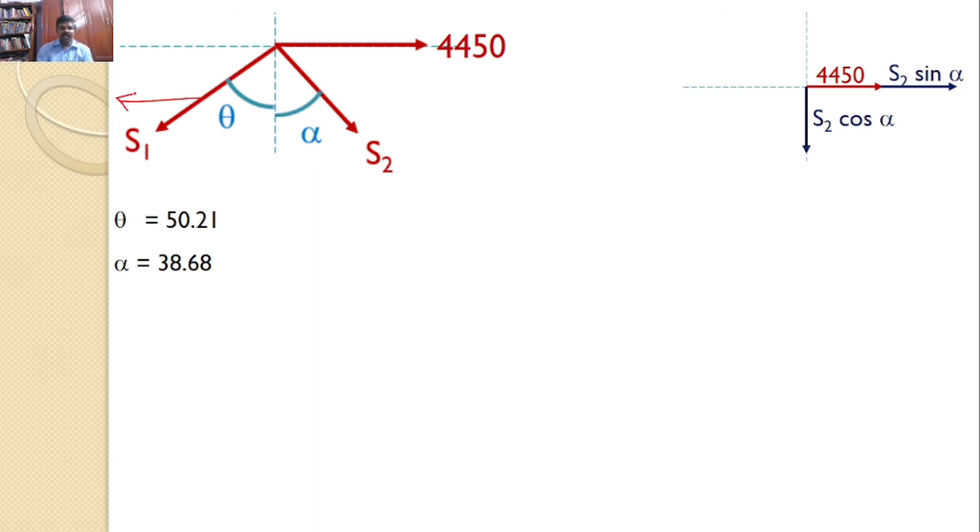Similarly, S1, the horizontal component is like this, vertical component is like this. And the vertical component is cos because S1 makes an angle theta with the vertical. So, you can say it is S1 cos theta and this is S1 sin theta.